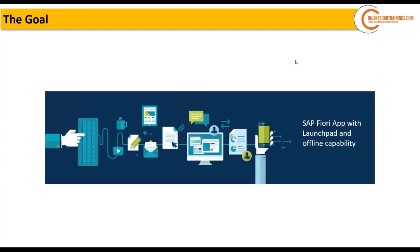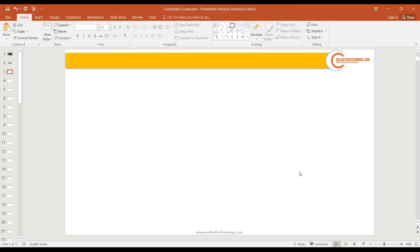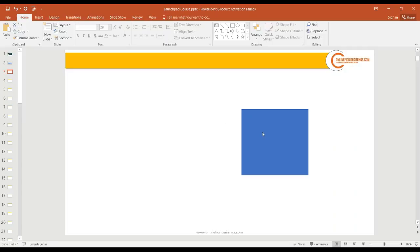So enough of theory — let's talk about the basic concepts of security. When we start with security, the very first question is: what is it that we want to secure? Imagine an SAP system in your company — as a security consultant, what do you want to secure? There are two aspects: the first is called authentication and the second is called authorization.